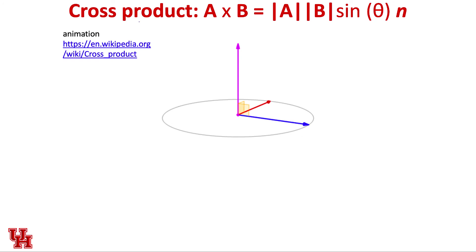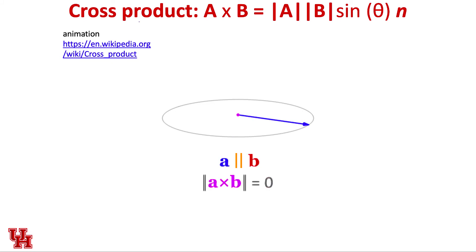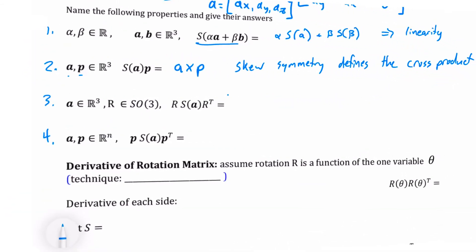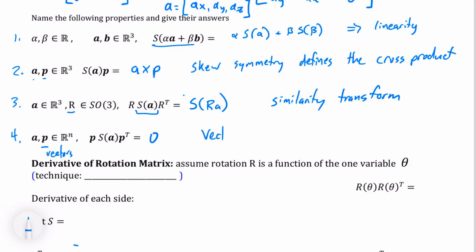Recall that the cross product is maximized when the vectors are 90 degrees out of phase, zero when they are 180 degrees out of phase, and minimized (most negative) at negative 90 degrees. The third property: if a is in R3 and R is a special orthogonal matrix SO(3), then R·S(a)·R^T equals S(R·a) — this is the similarity transform. The fourth property: for vectors a and p in Rn, a^T times S(a) times p equals zero — the vector transform property.